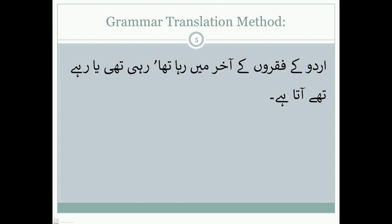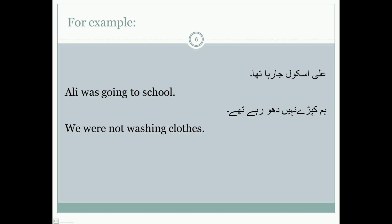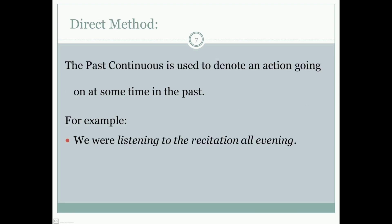We are bilingual and our native tongue is Urdu, so it is necessary to understand past continuous tense using the grammar translation method as well. In Urdu, sentences ending with 'ja raha tha', 'rahi thi', or 'rahe te' indicate past continuous tense. For example, 'Ali school ja raha tha' translates to 'Ali was going to school.' Another example: 'Hum kapde nahi dho rahe te' translates to 'We were not washing clothes.'